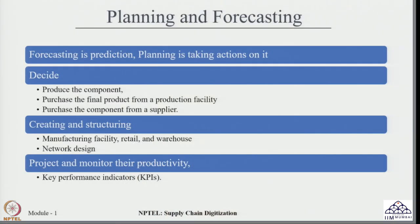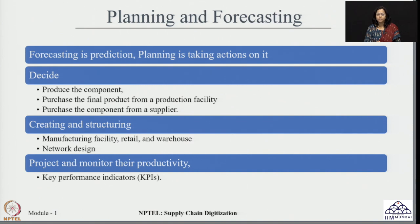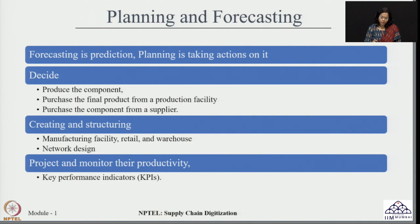Let us start with the first process: planning and forecasting. These two terms are quite correlated, but there is a small difference. Forecasting is all about predicting your requirements — predicting demand, marketing sales, and so on. Whereas planning involves taking decisions about how to manage your resources, production, inventory, capacity, and financials to ensure that the predicted demand is fulfilled properly.